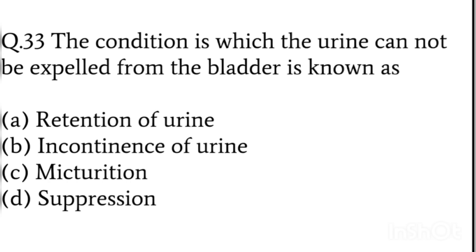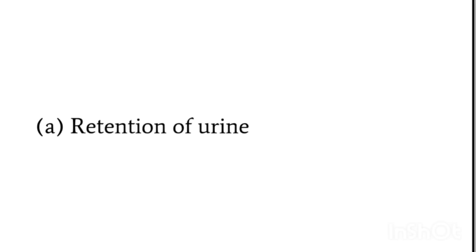The condition in which urine cannot be expelled from the bladder — when urine cannot come out from the bladder, what is it called? Options: retention of urine, incontinence of urine, micturition of urine, micturition suppression. Retention means to be held back; incontinence means unable to hold. The answer is retention of urine.